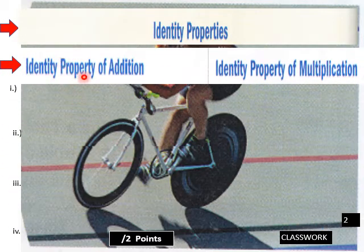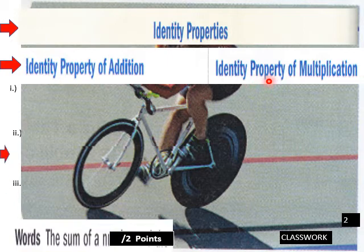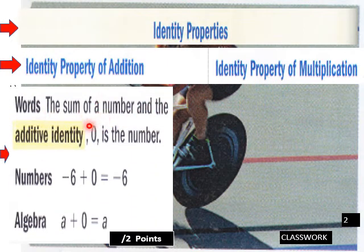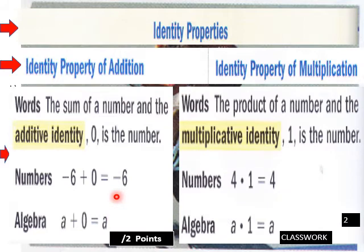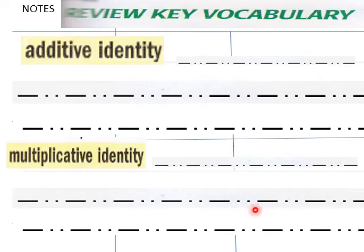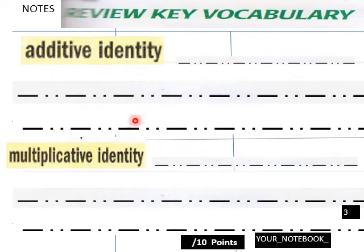Identity properties: identity property of addition and identity property of multiplication. For addition — the sum of a number and the additive identity zero is the number. So negative six plus zero is negative six, and a plus zero equals a. For multiplication — the product of a number and the multiplicative identity one is the number. So four times one equals four, and a times one equals a.